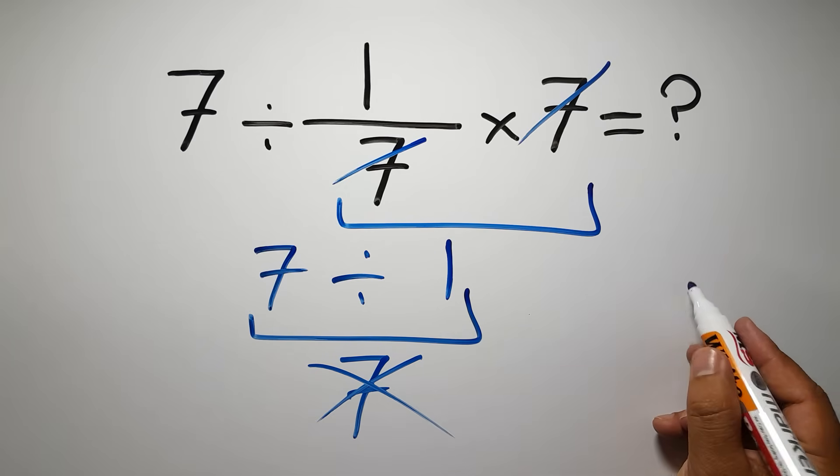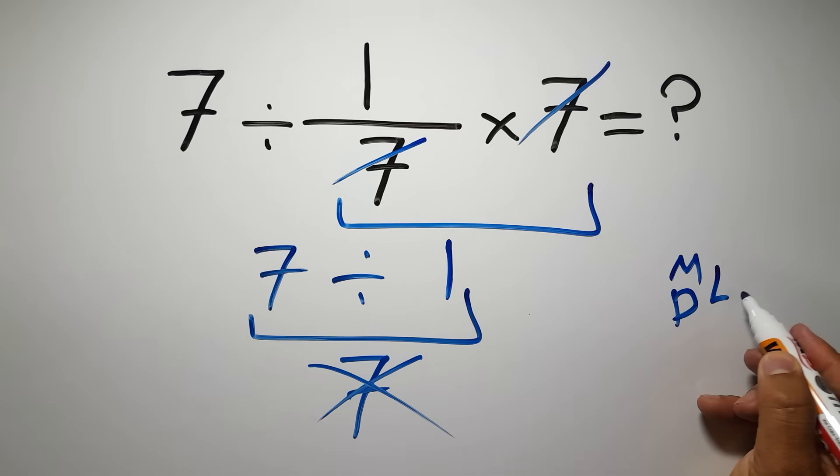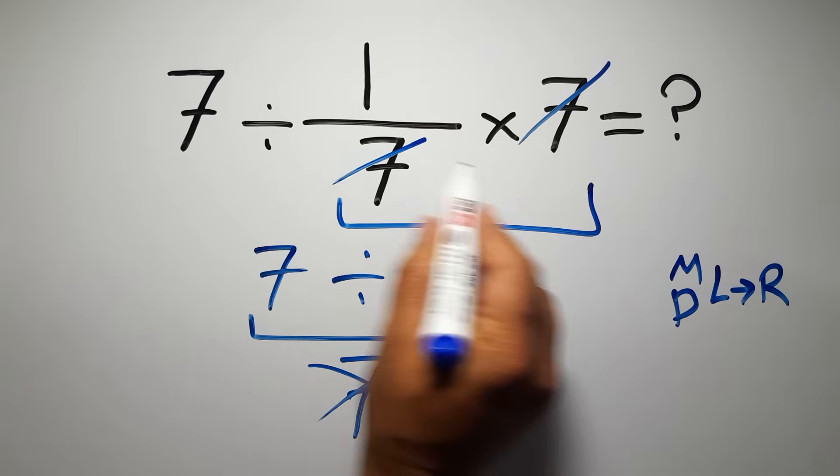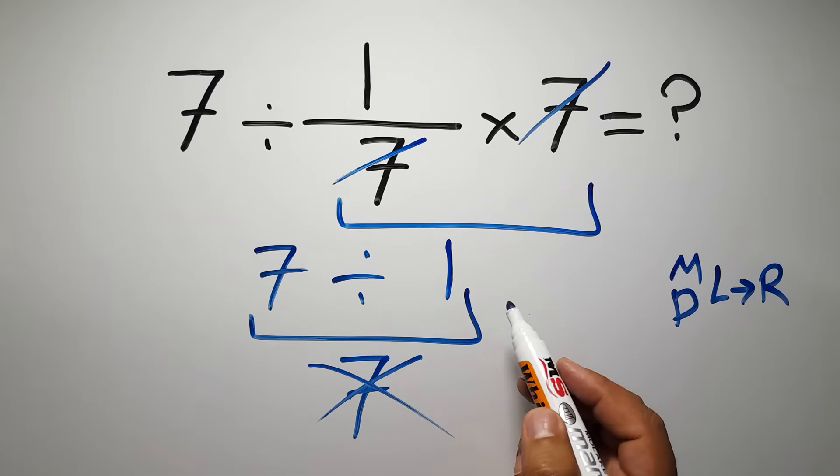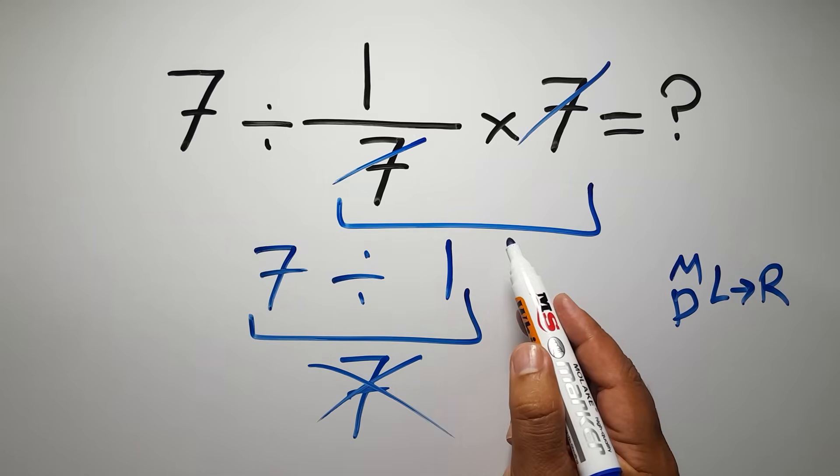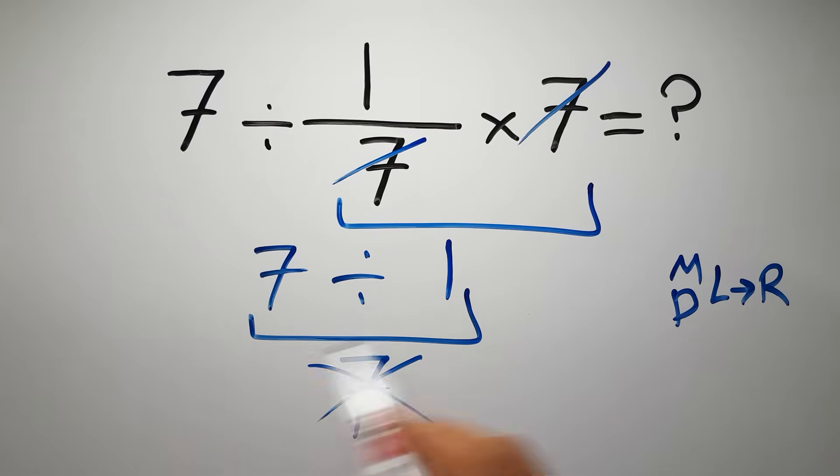Because according to the order of operations, multiplication and division have equal priority, and we have to work from left to right. So here, first we have to do this division, then this multiplication. If we do this multiplication before this division, it is wrong.